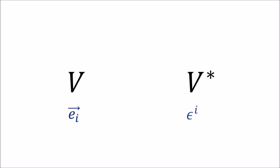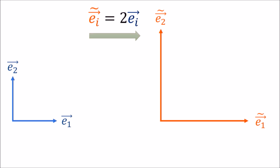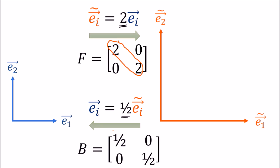This seems nice at first, but there's actually a problem with this approach. To see why, let's consider a change of basis. Let's say we change to a new basis by multiplying all the old basis vectors by two — making all the vectors twice as big. This is essentially using a forward transform with twos along the diagonal. The backward transform would be the opposite, multiplying all the vectors by one half.